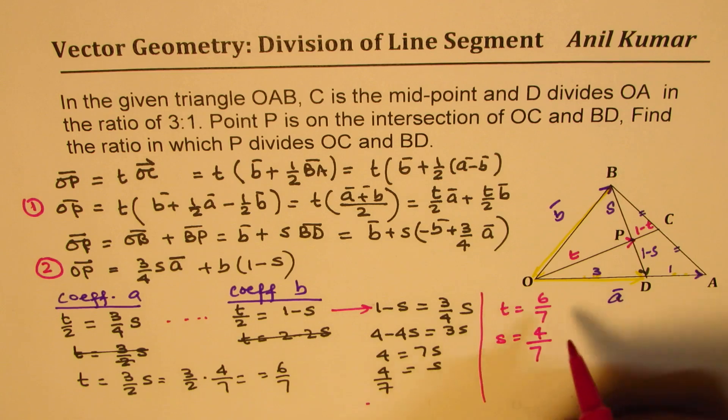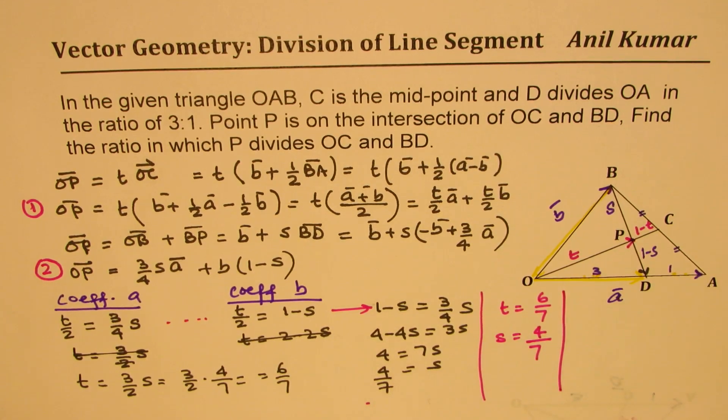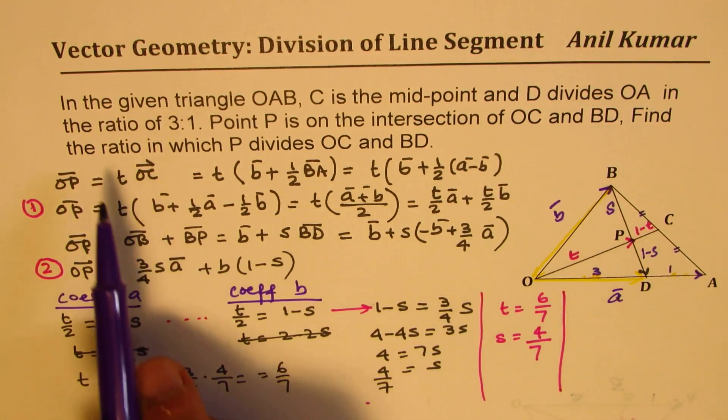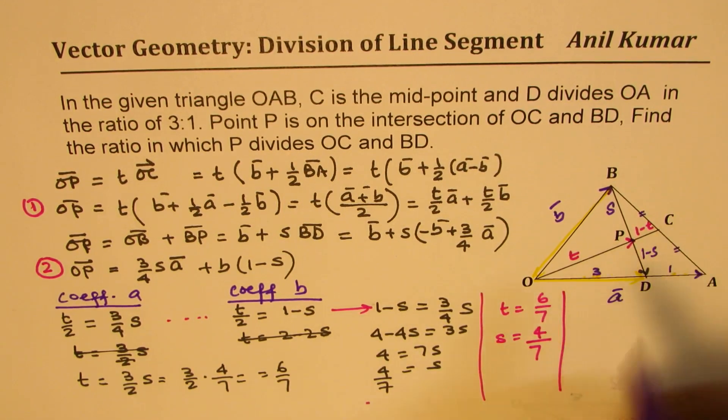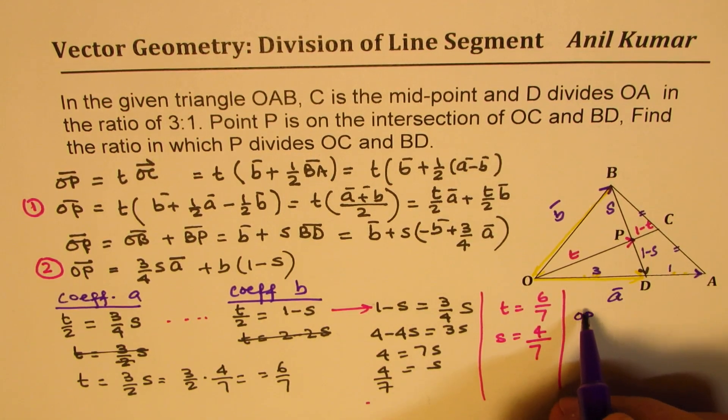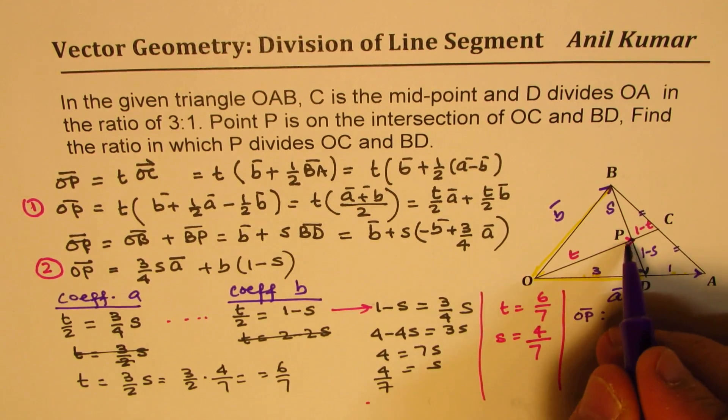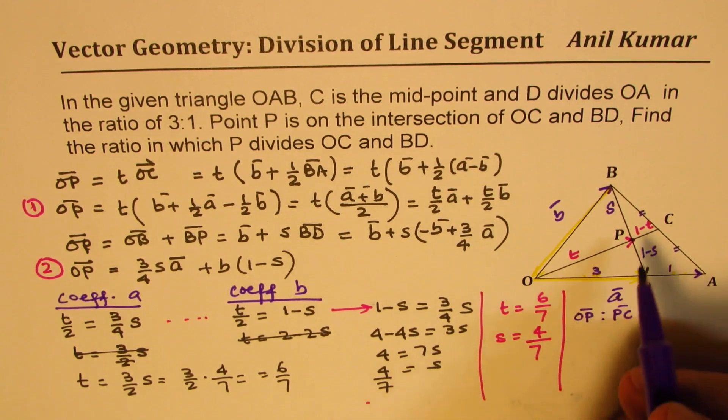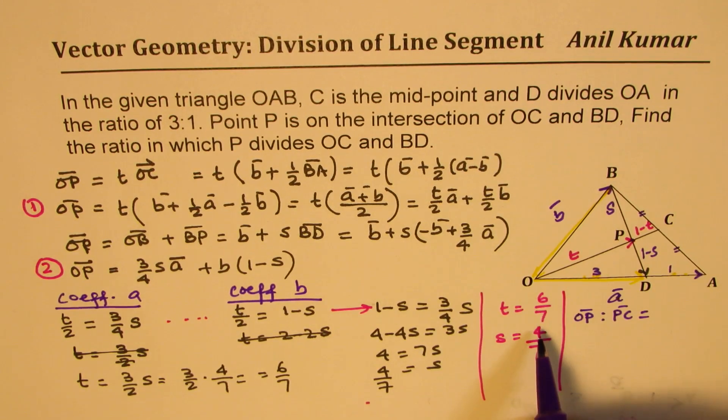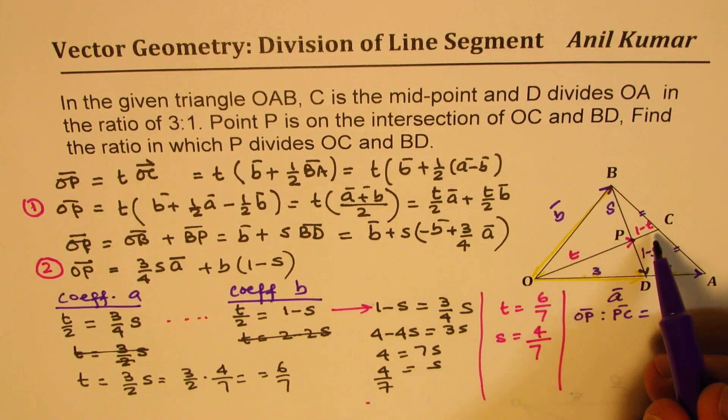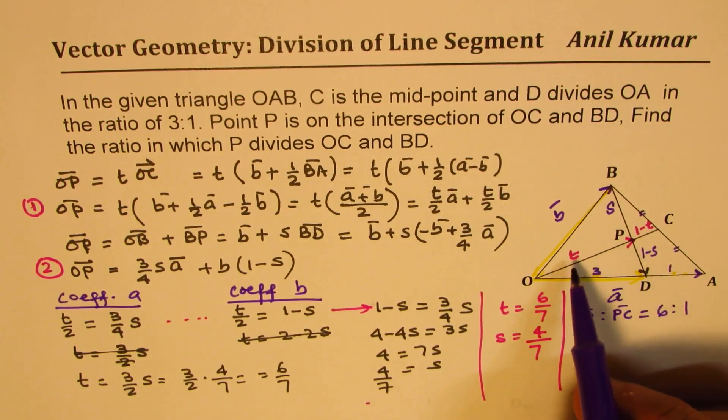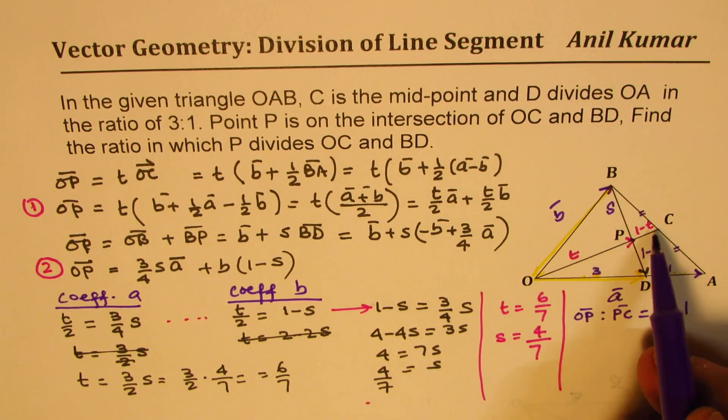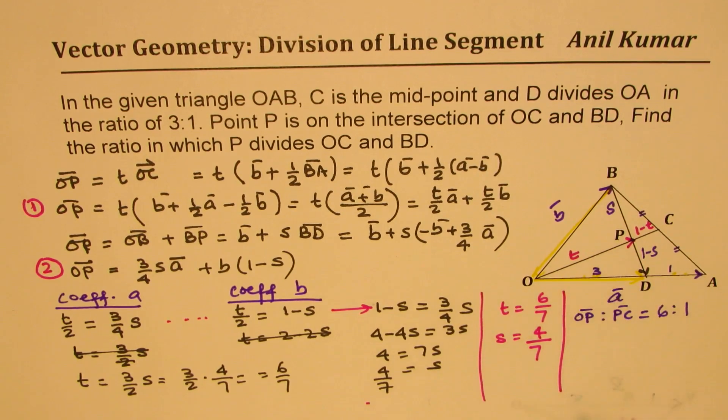And now, we can write down our answer. So, we want to know in what ratio P divides OC and BD. So, as far as OC is concerned, we can write the ratio OP is to PC is what? Since T is 6 over 7, that means total divisions are 6 over 7. So, it is 6 is to 1. You get the idea? 6 over 7. So, total is, this is 1 out of 7. This is 6 out of 7.